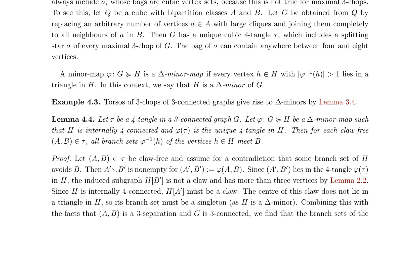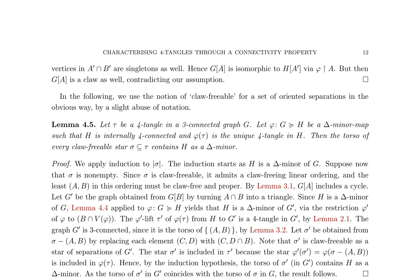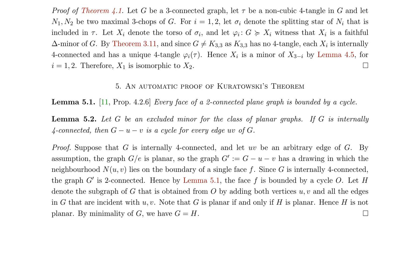The authors delve into the properties of four-tangles in three-connected graphs, focusing on the concept of claw-freeable sets of oriented separations. They establish Lemma 4.5, which states that if a four-tangle tau in a three-connected graph G has a delta-minor map phi to an internally four-connected graph H, then the torso of every claw-freeable star sigma contained in tau contains H as a delta-minor. This result is proven through induction on the size of sigma, utilizing Lemmas 3.1, 3.2, and 4.4. Building upon this, the authors prove Theorem 4.1, demonstrating that if G is a three-connected graph, tau is a non-cubic four-tangle in G, and N1, N2 are two maximal three-chops of G, then the torsos of the splitting stars of N1 and N2 are isomorphic.